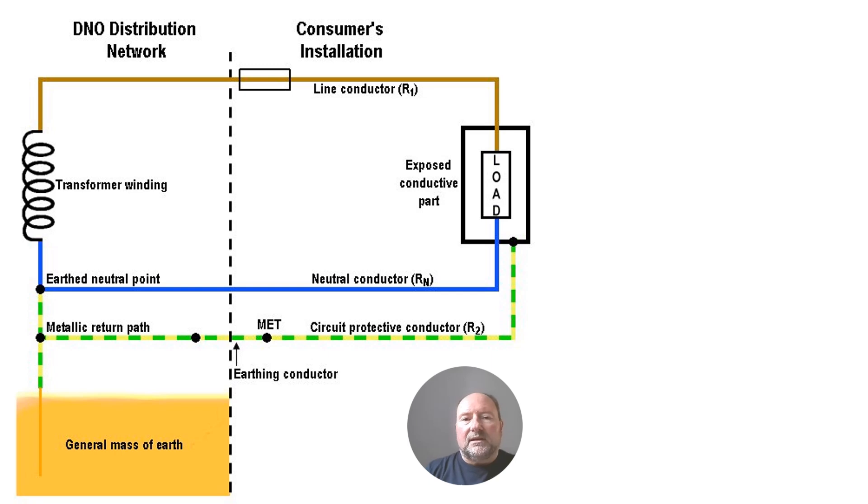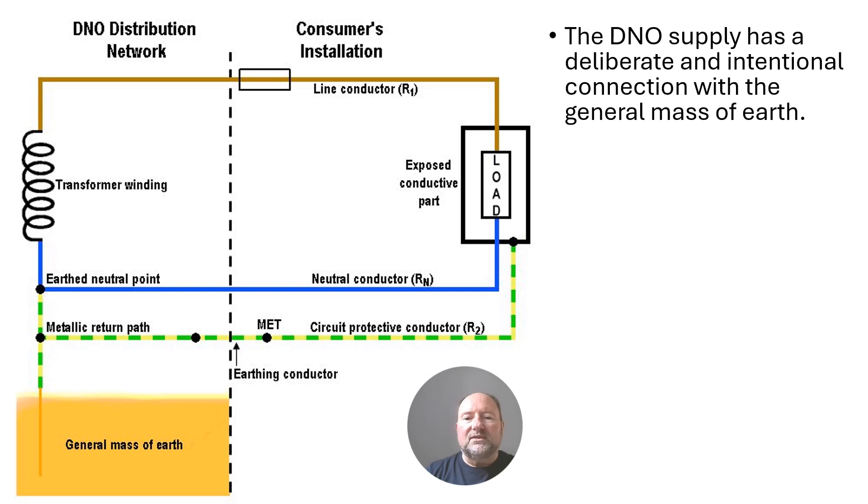Certainly in this country, the public distribution supply system has a deliberate and intentional connection to Earth. When I say Earth, I mean that general mass of Earth and that connection is made there at the Earth neutral point of DNO secondary winding.